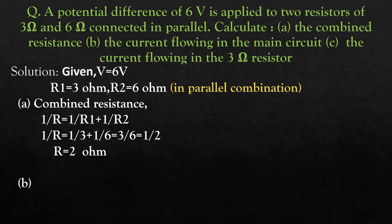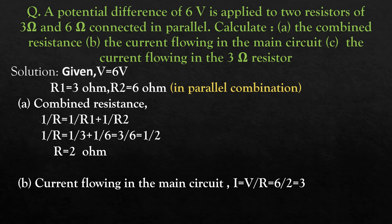We are asked for the current in the overall circuit. In parallel combination, the voltage is the same across all branches. For current flowing in the main circuit, I = V/R. Since V = IR, we have I = V/R = 6/2 = 3 ampere.